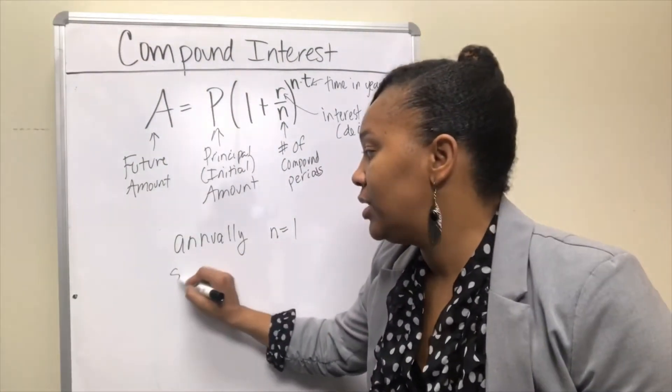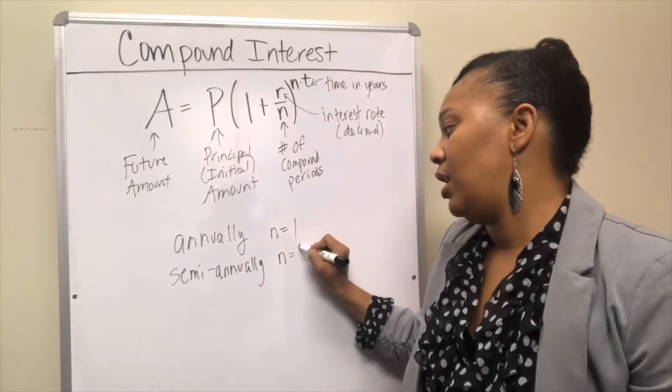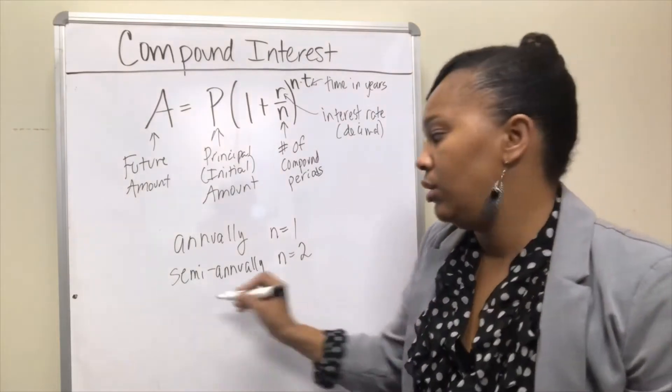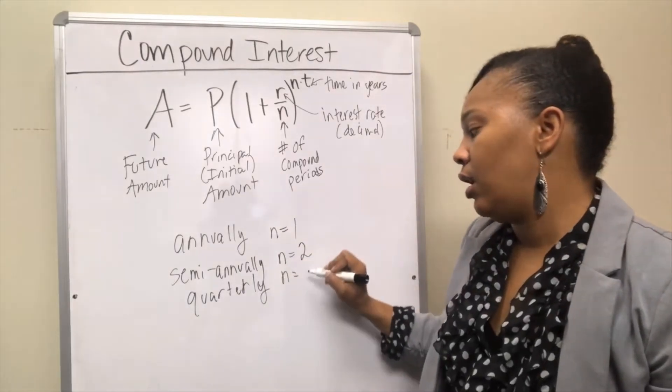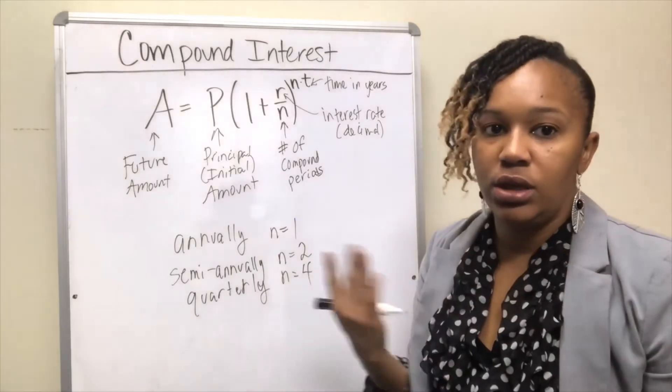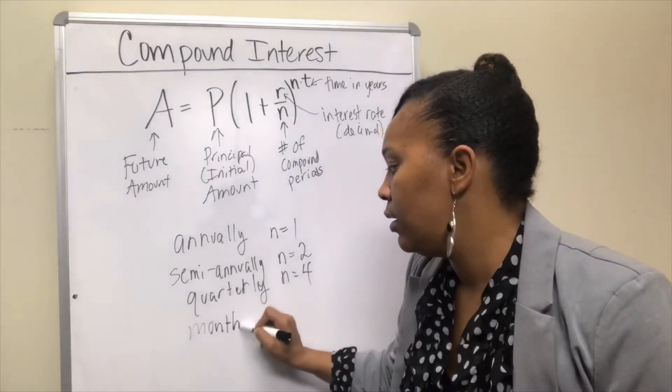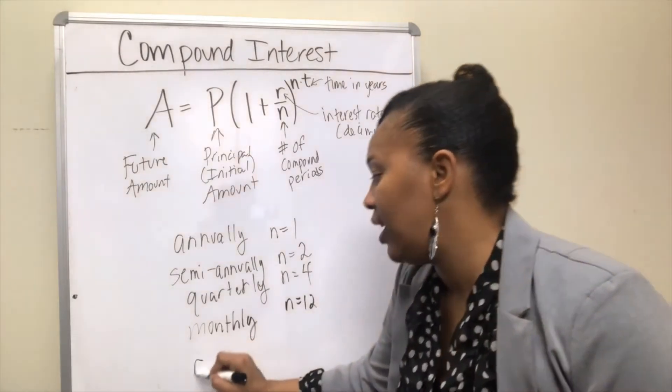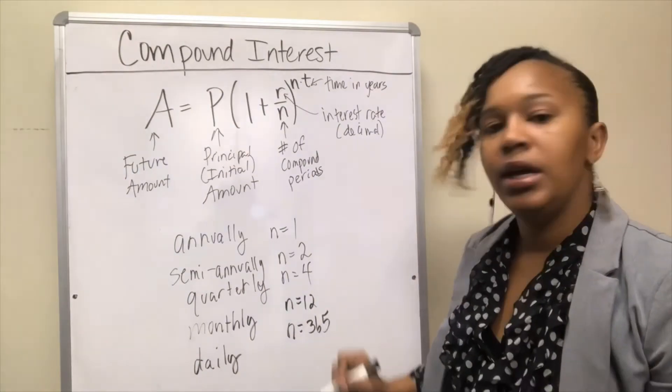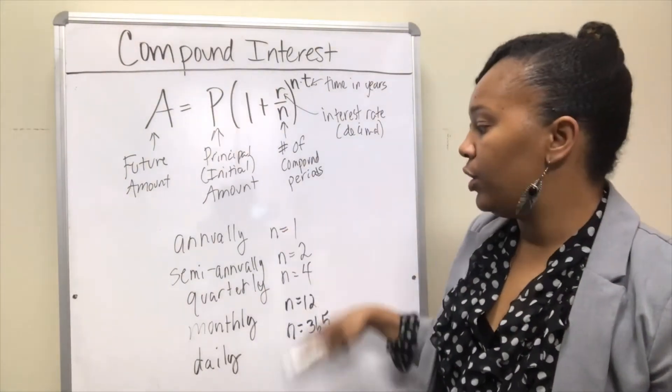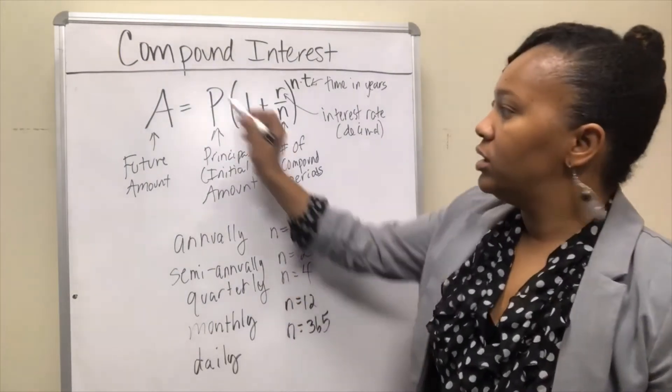If they do it semi-annually, that means they add interest twice a year. If it's quarterly, that means every three months they add interest—four times a year. If it's monthly, it will be 12. And if it's daily, in a regular year, not a leap year, it will be 365. These would be your ends for the various circumstances or scenarios.